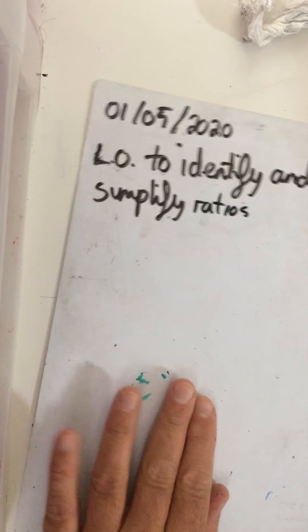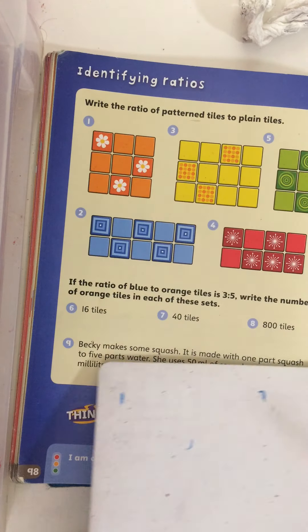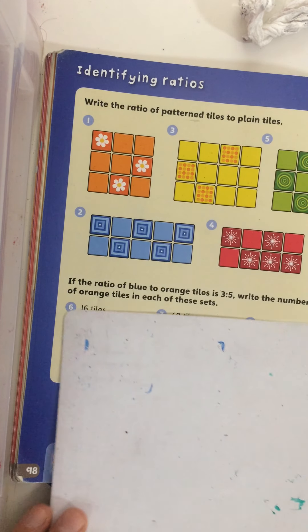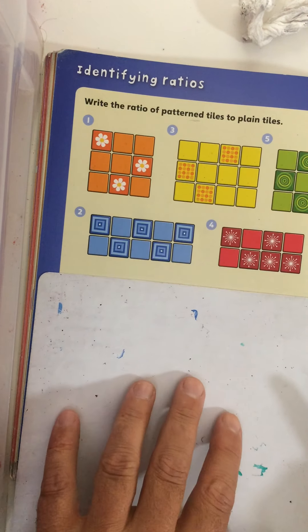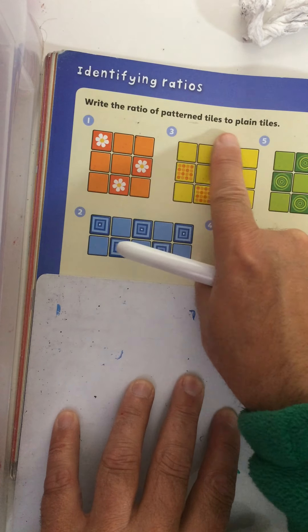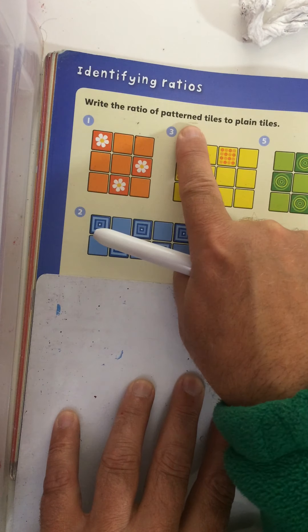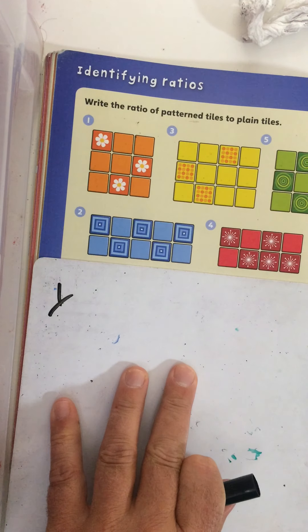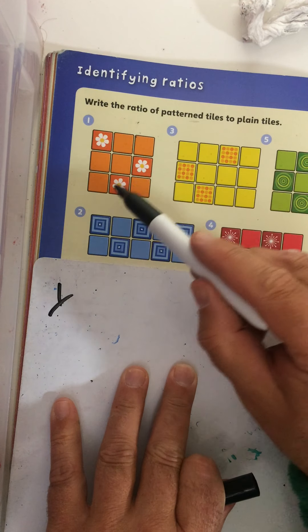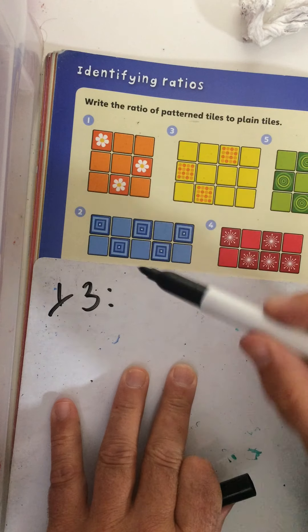Have a look at page 98 in your book. Pause the video if you need to. Here we have our ratios — it says 'write the ratio of pattern tiles to plain tiles.' It's important which words come first. Pattern tiles comes first, to plain tiles. For number one, how many pattern tiles are there? One, two, three — compared to how many plain tiles? One, two, three, four, five, six.